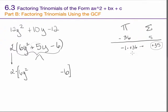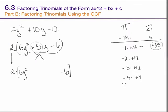So: negative 1 times positive 36, negative 2 times positive 18, negative 3 times positive 12, negative 4 times positive 9, negative 6 times positive 6. There's no 5 in there because 5 doesn't go into 36.